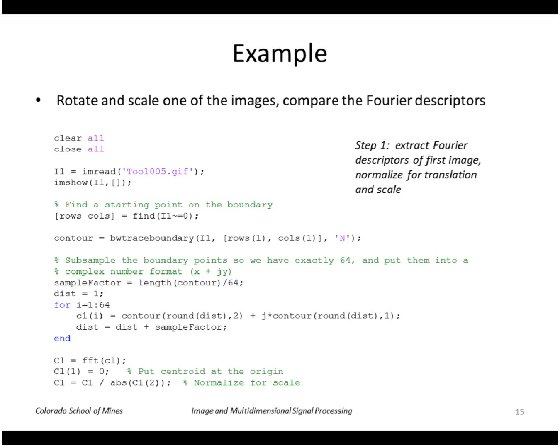So let's take an example, let's do a little experiment where we take one of those tool images. We'll extract the Fourier descriptors. Now we're going to normalize for translation and scale. So we'll zero out the first coefficient and divide through by the magnitude of the second coefficient.